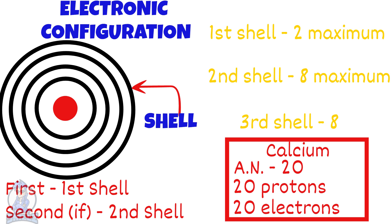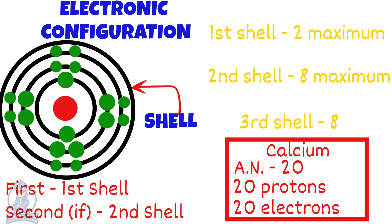Now we arrange the electrons in the shells, completing the inner ones before we move on to an outer one. The first shell can have 2 electrons maximum, so once we put that there, there would be 18 electrons left. If we put 8 in the next shell, there would be 10 left. If we put another 8 in the next shell, there would be 2 electrons left, which would fit in the fourth shell.